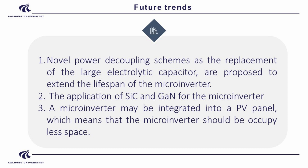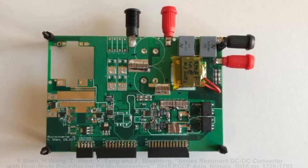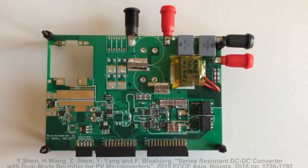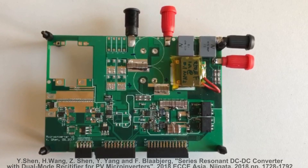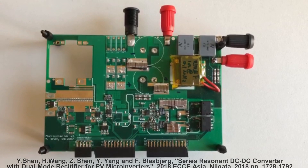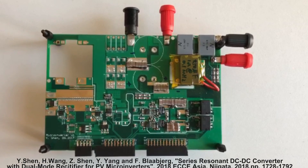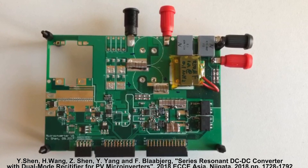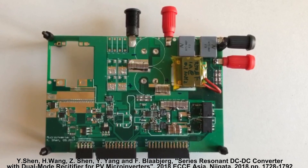New devices like silicon carbide and gallium nitride can be used for the microinverter. The microinverter can also be integrated into the PV panel to save more space. This video shows a product from our group — a 1 MHz microinverter using gallium nitride devices.